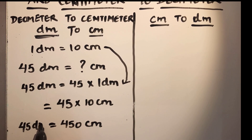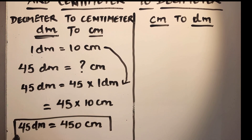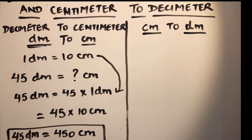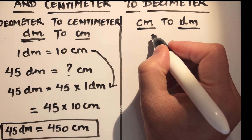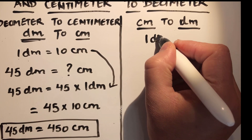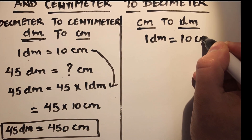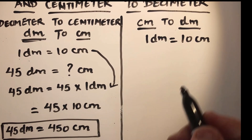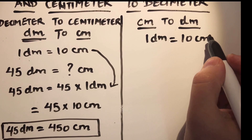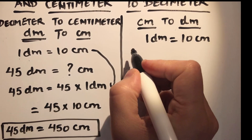Now we move on to centimeter to decimeter conversion. Here also we should know the basic relation, which is 1 decimeter is 10 centimeters. What we need to do is find the relation: 1 centimeter is how many decimeters.